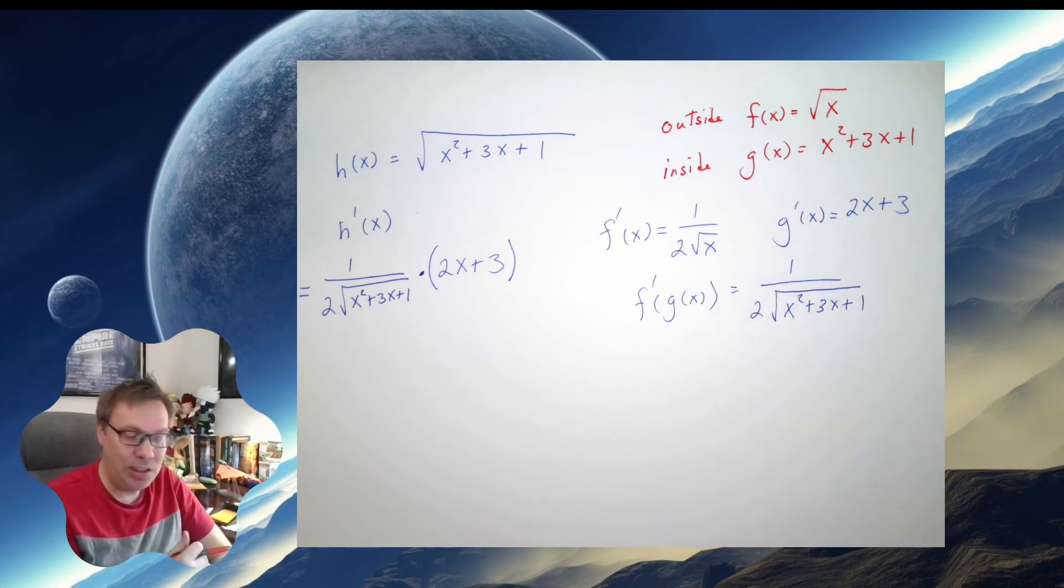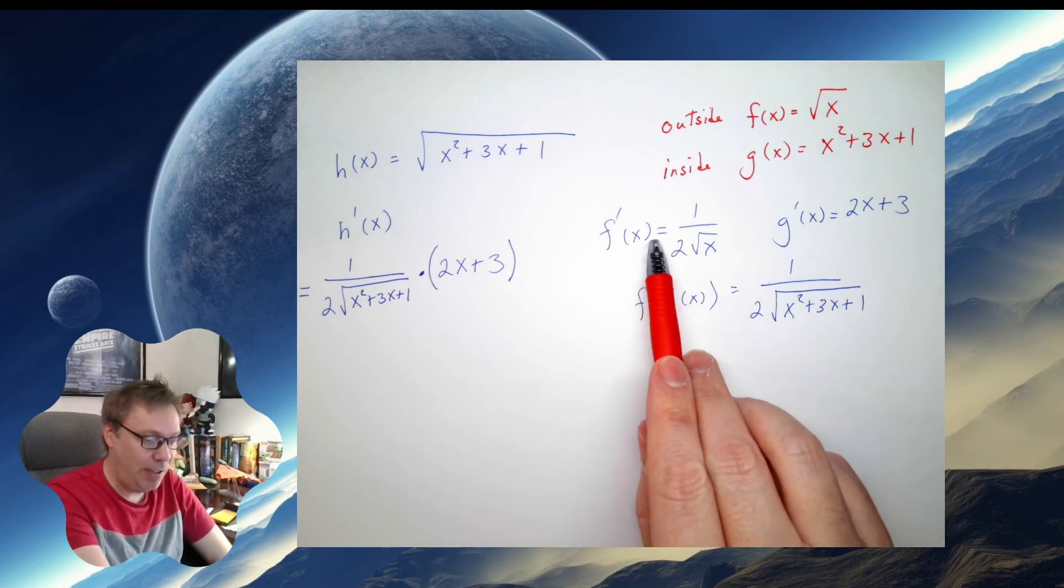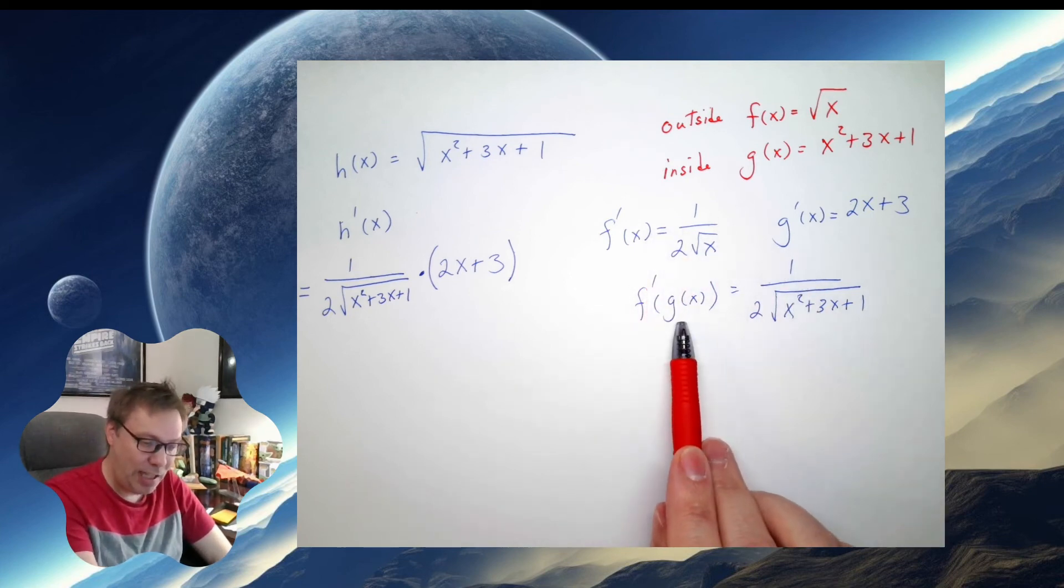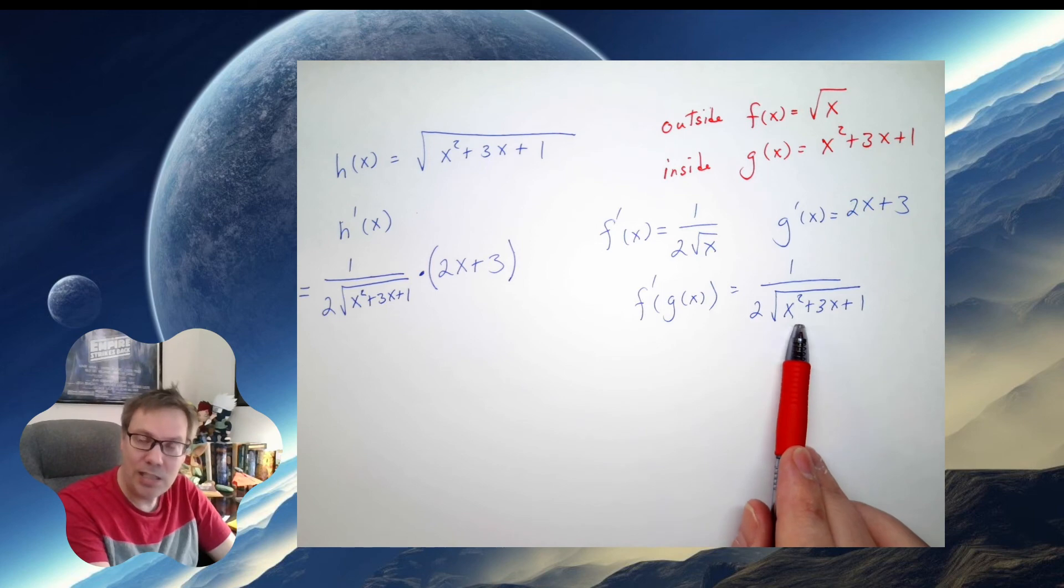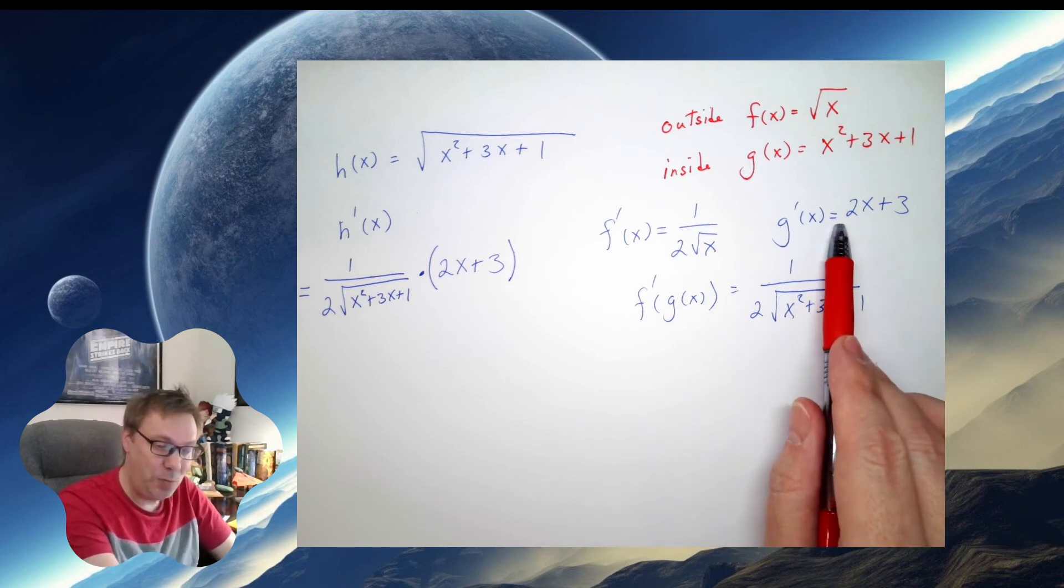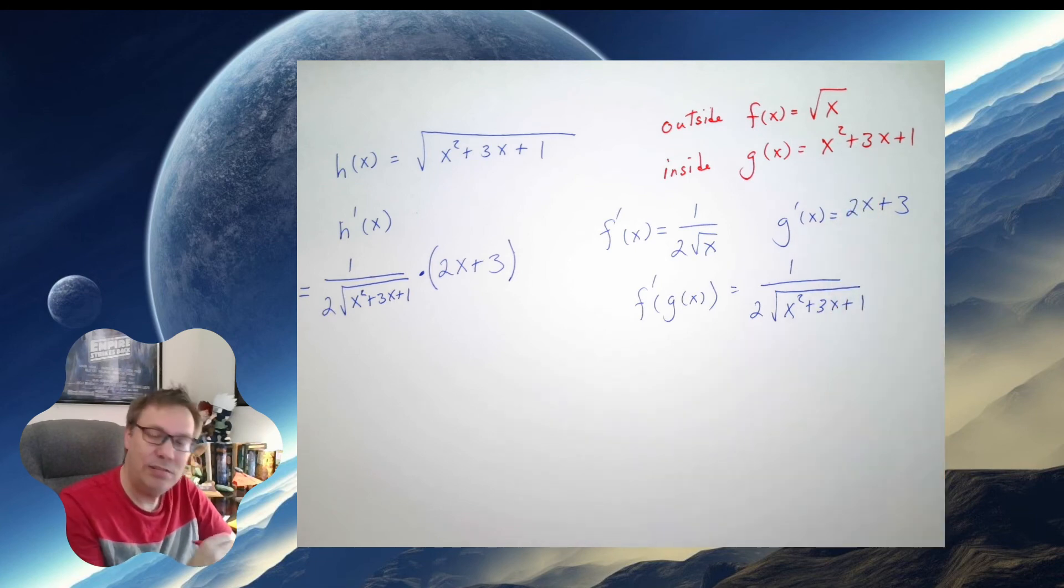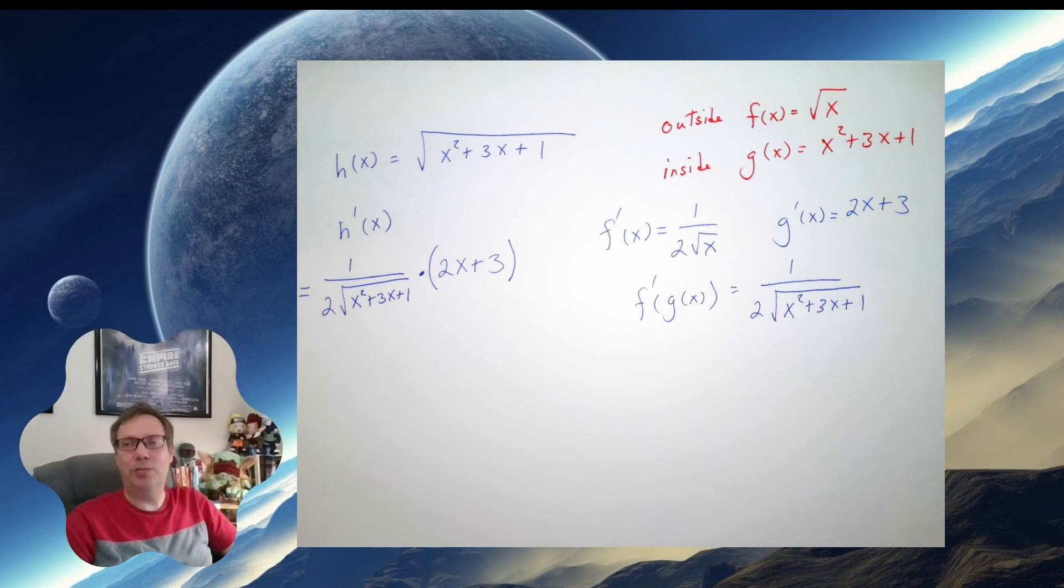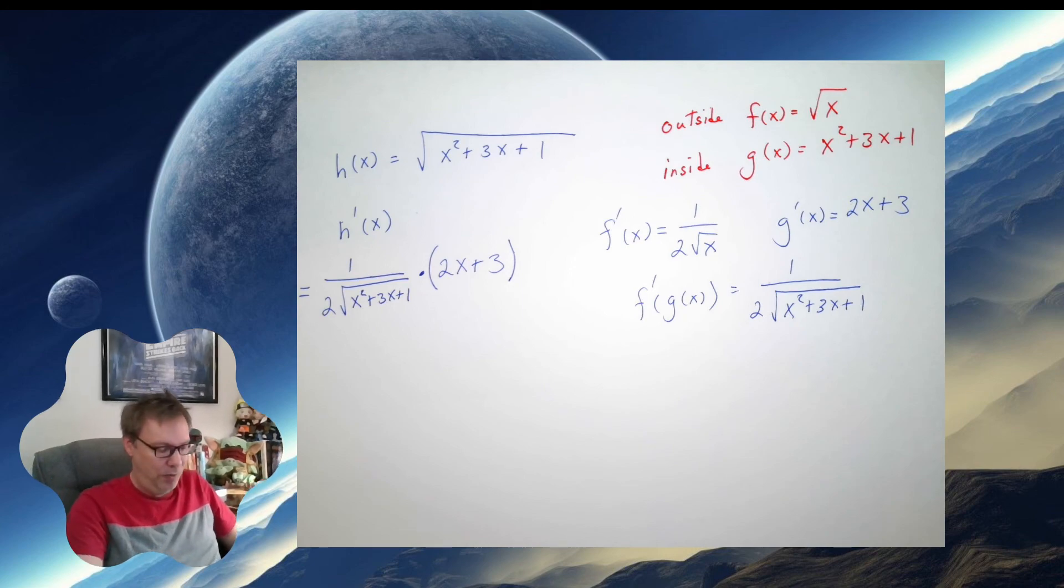So I'm decomposing this problem. I'm first figuring out the derivative of the outside, and I'm going to leave the inside alone. That's this piece. Then I need to multiply this by the derivative of the inside, which is a pretty simple problem at this point. So there are two examples of using the chain rule. I hope you found this video helpful.